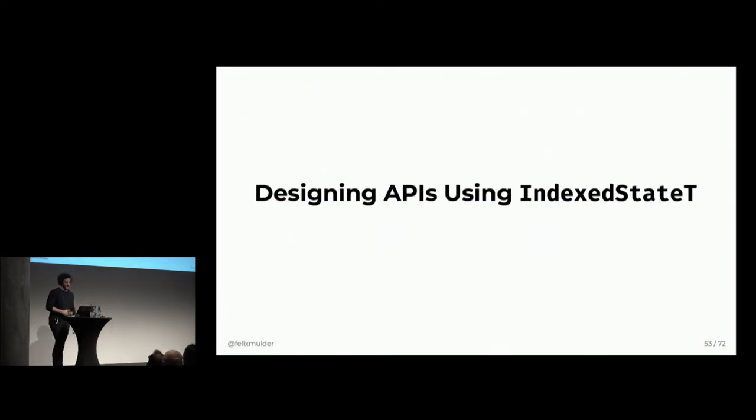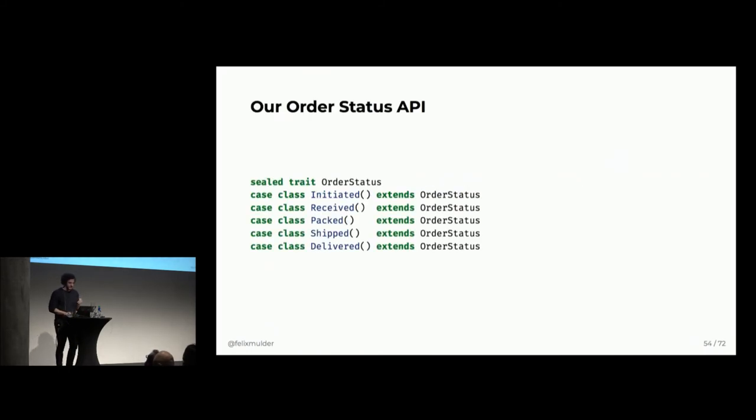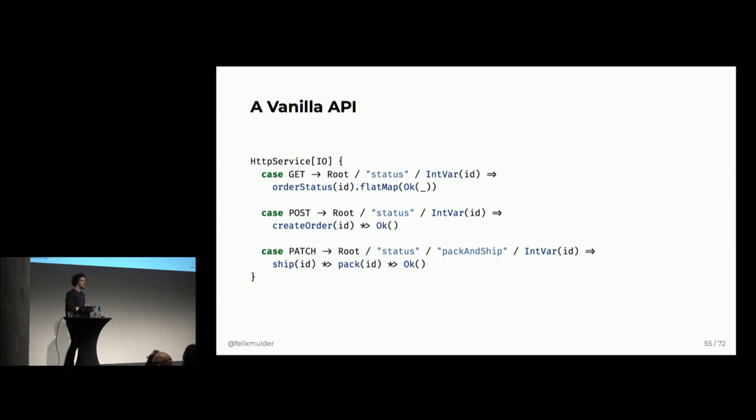So, when it comes to designing APIs using index state, it's really nice way to enforce proper usage of your API. So, let's take a look at our order stats API again. And give you guys a sense of how you could use this in practice. And one idea would be to create an HTTP service with a bunch of different routes like this. So, you have one route that can give you the status of some order. You have something to create an order. And you have something to patch the status of an order. Can anyone spot the mistake? So, it's the third line. Or not the third line, but the third. Yes. Exactly. So, we don't want to do that. So, let's make this a bit better.